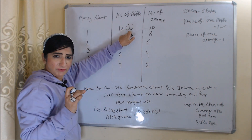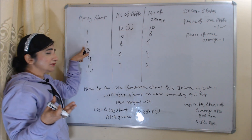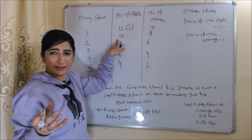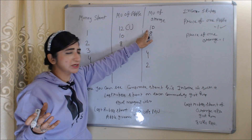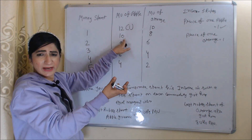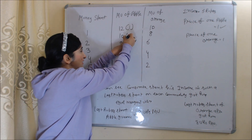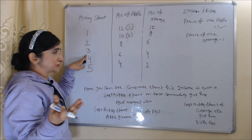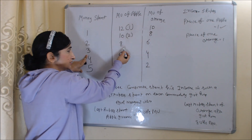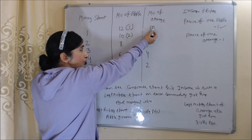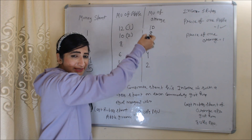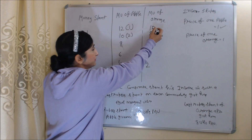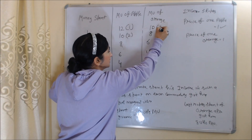For the second rupee, he has two options — buy one orange or a second apple. Both give him the same marginal utility of 10, so suppose he chooses to buy apple. For the third rupee, he has two options — buy one orange or a third apple. He will buy one orange because it gives him 10 utils of marginal utility, which is more than the third apple. So he spends the third rupee on buying orange.